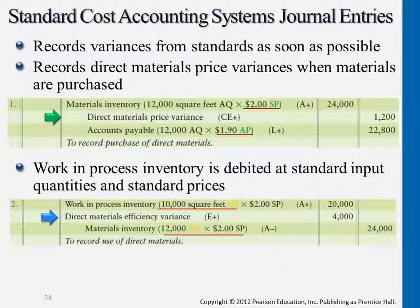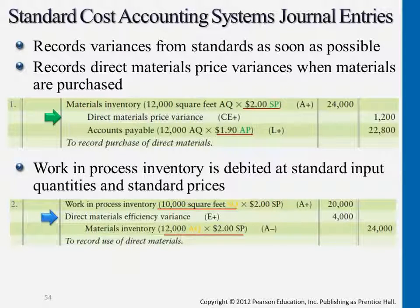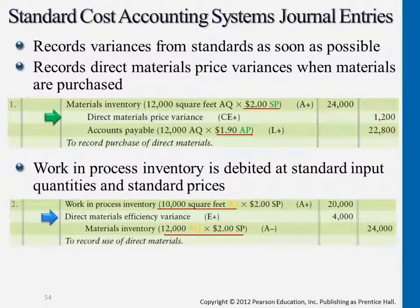So what this is showing is that if the company is using a standard costing system, they do budgeting. For most cases, large businesses do. Managers, when they look at these transactions, can easily capture which ones have variances in the material category, labor category, and other manufacturing overhead. So if there are no differences, then we don't have that middle part — direct materials price variance. But in case there is, for the differences in total, $2,400 compared to $22,800, we actually spent more or less than what we expected.